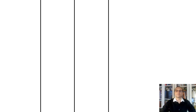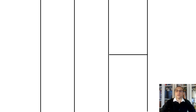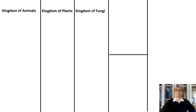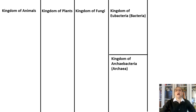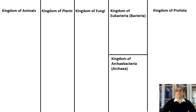Later, the kingdoms were revised, and up until recently there were six kingdoms. Let me introduce them: Kingdom Animalia, Kingdom Plantae, Kingdom Fungi, Kingdom Eubacteria (or simply Bacteria), Kingdom Archaeobacteria (or Archaea), and Kingdom Protista.